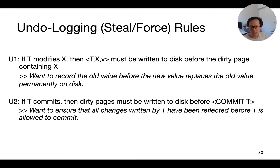The second rule states that if a transaction commits, then the pages that it modified must be written to the disk before the commit log record itself is written to the disk. That rule ensures that all changes made by the transaction have been written to the disk before the transaction commits. We must make sure that all data changes have made it to the disk before we allow the commit record to be written.